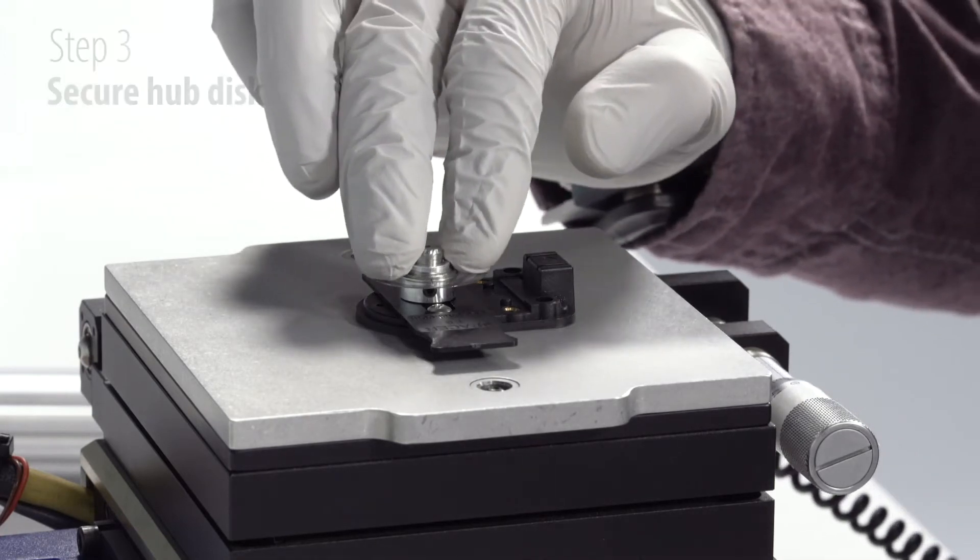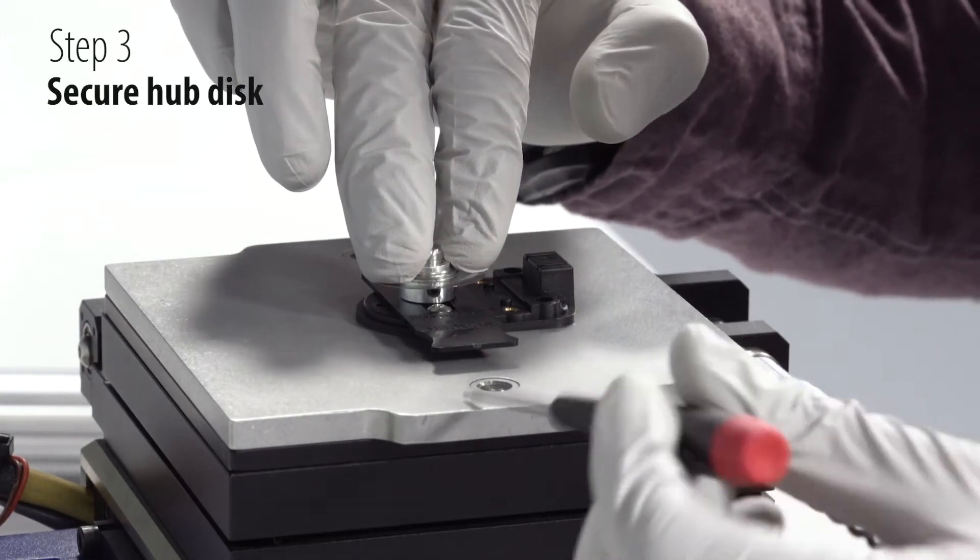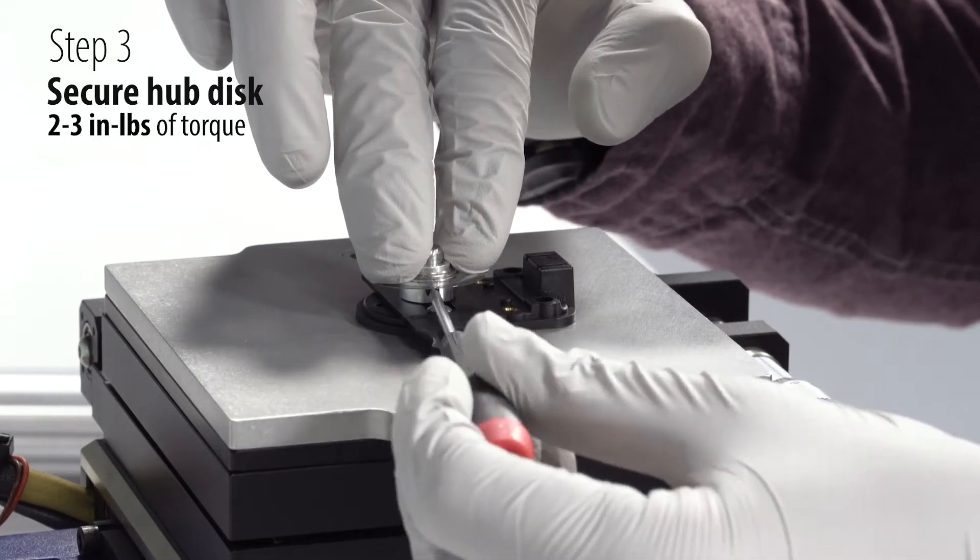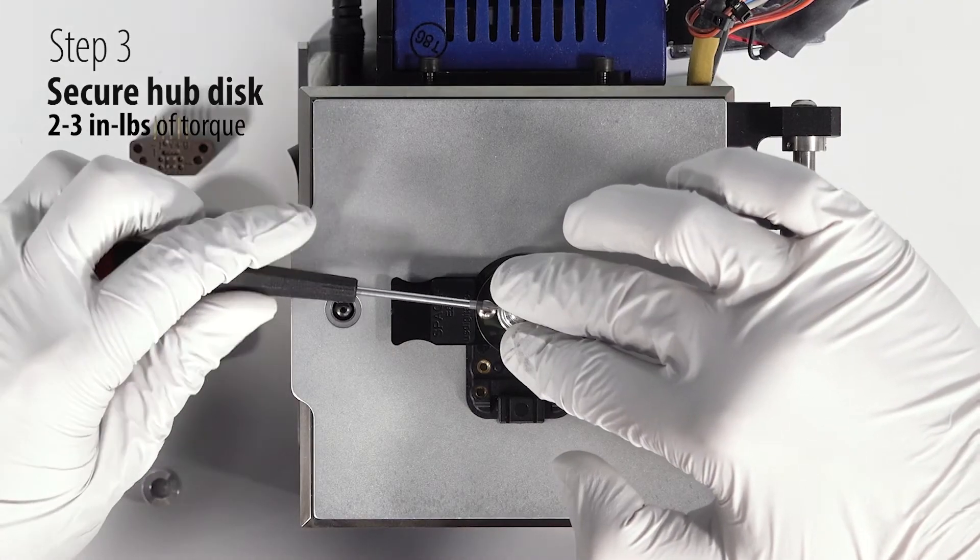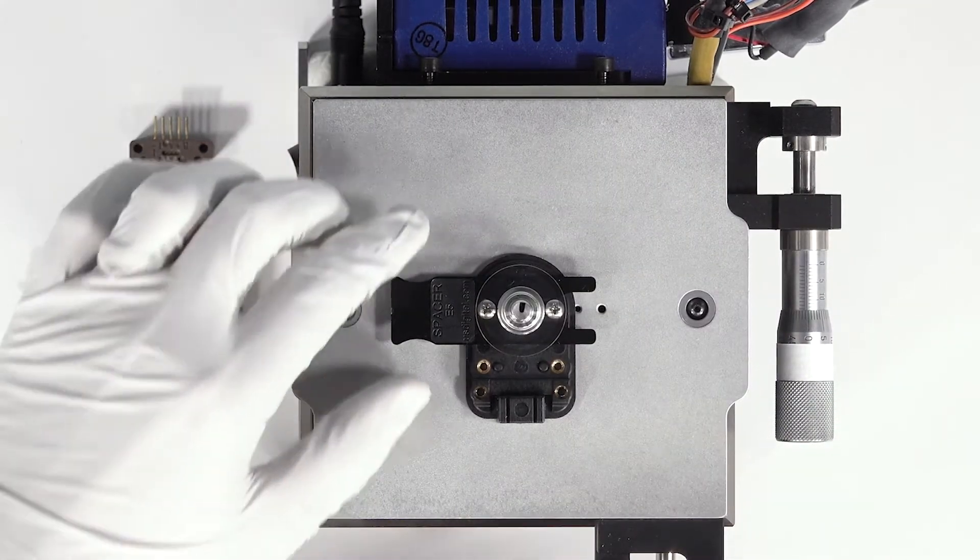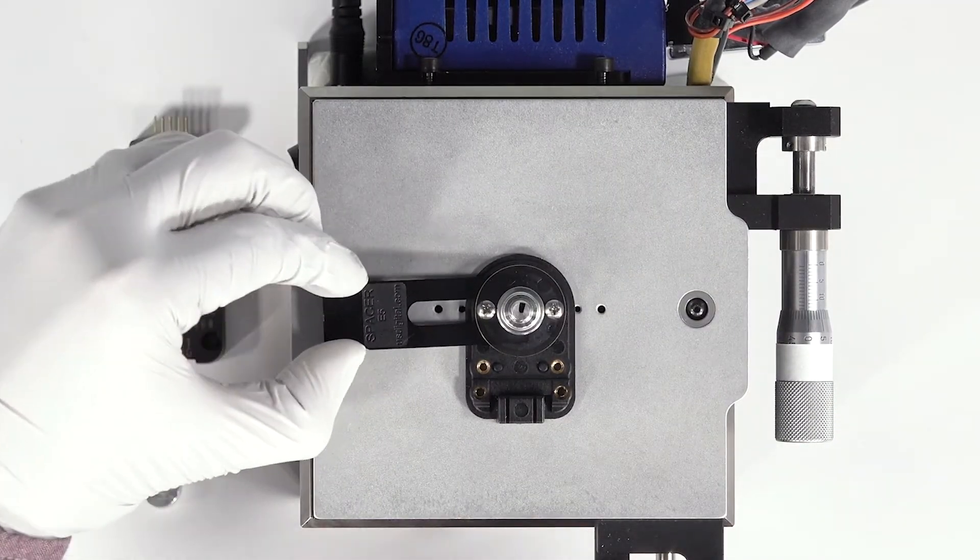In step three, we'll be applying slight downward pressure on the hub disk assembly and using the hex tool to tighten the set screw to two to three inch pounds. You can then remove the spacer tool and it can be used for future installations.